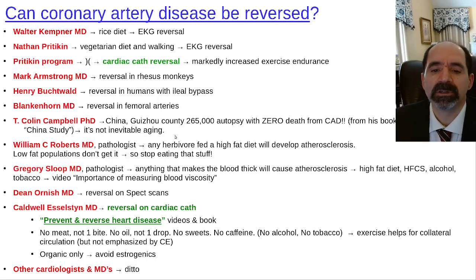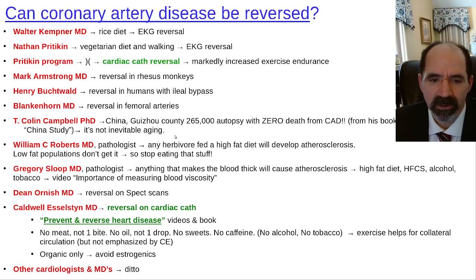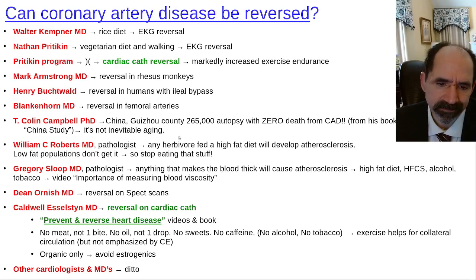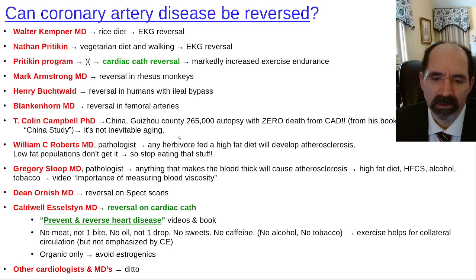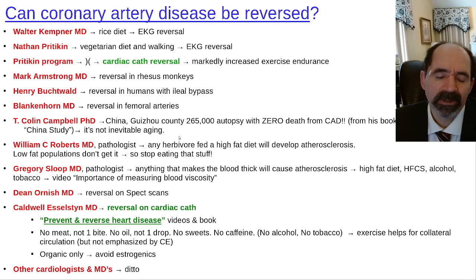Dean Ornish showed reversal of coronary artery atherosclerosis on SPECT scans, where heart perfusion improved following patients being put on a vegetarian diet. Caldwell Esselstyn then wrote the classic book on reversal of coronary artery disease called 'Prevent and Reverse Heart Disease.' You don't need to buy the book — just watch his videos online.